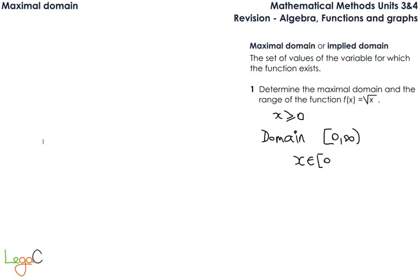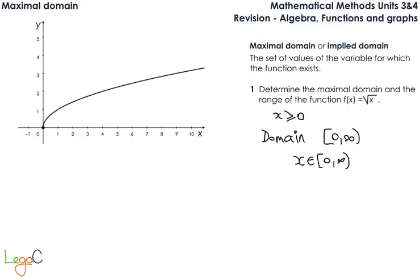There is another notation as well: x is an element of [0, ∞). If we look at the graph of this function, you can actually see that the domain is from 0 to infinity. And the range is from 0 to infinity as well.